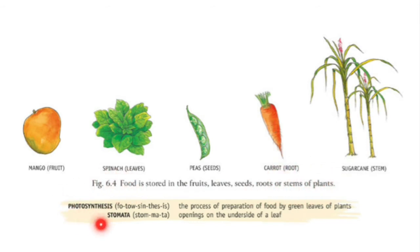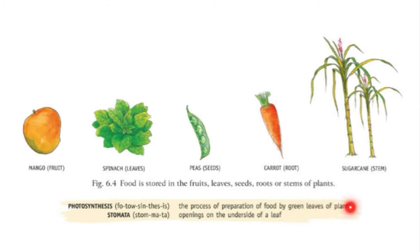Now here there are new words. Photosynthesis: the process of preparation of food by green leaves is called photosynthesis. Then, stomata are the openings on the underside of the leaf. What is the function of stomata? It is a respiratory organ for a leaf — it takes in carbon dioxide and gives out oxygen and water vapor.